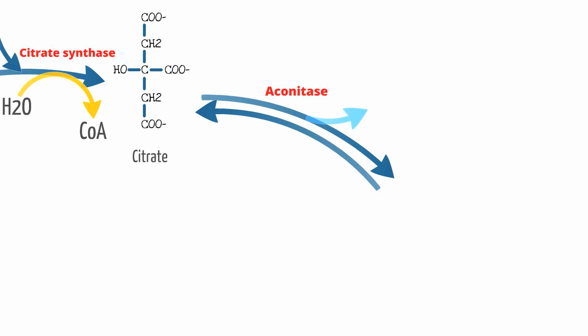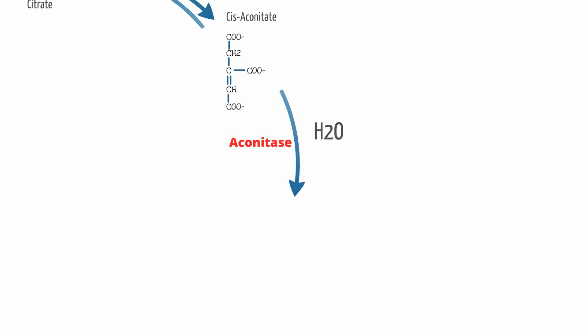The next step is really two steps in one. First, citrate isomerizes to cis-aconitate and eventually to isocitrate via the enzyme aconitase.